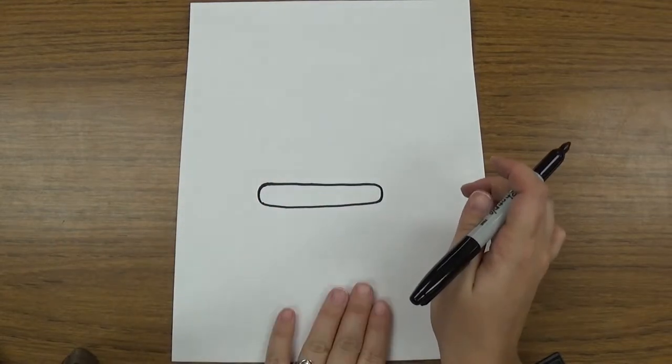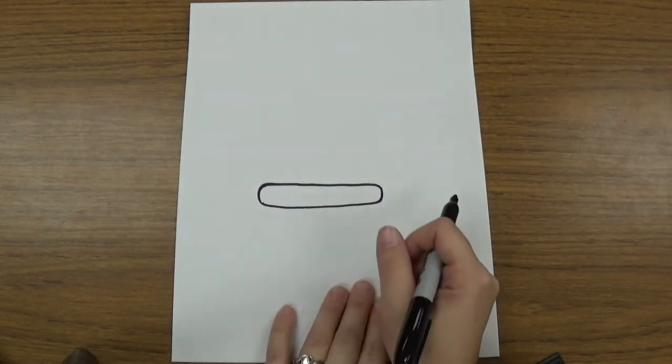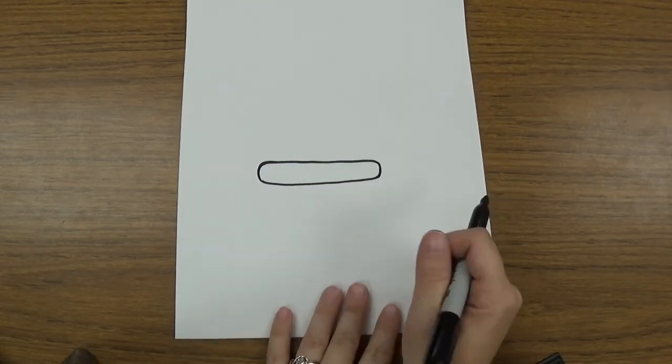Just like that and it doesn't touch this side, it doesn't touch this side, doesn't touch the bottom, doesn't touch the top. It's kind of right in the middle. So make that hot dog shape on your paper.